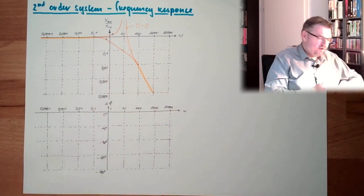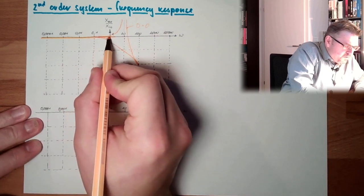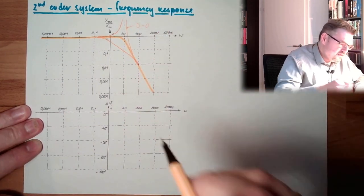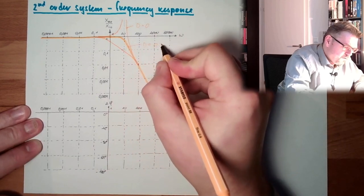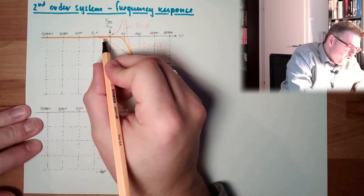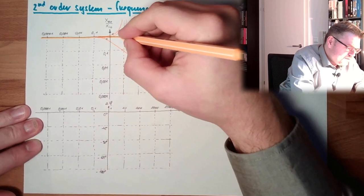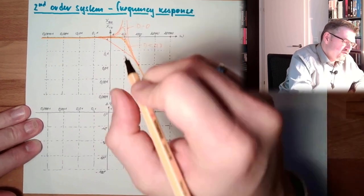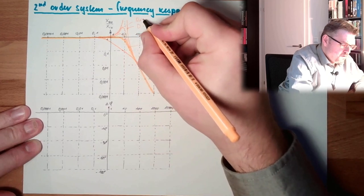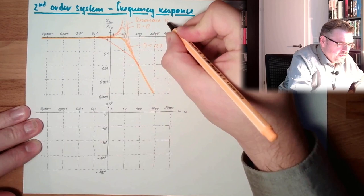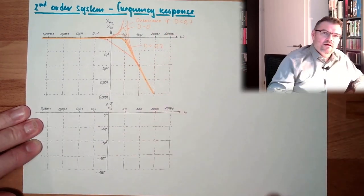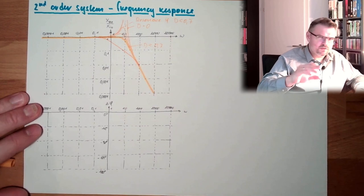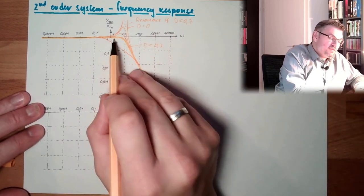When damping is around 0.7, we will have no rise, no resonance, and we go down smoothly. If we are below 0.7, we will see a rise. The lower the damping, the more pronounced the resonance frequency. Resonance occurs when d is lower than 0.7 — actually 1 divided by the square root of 2, which is approximately 0.7.